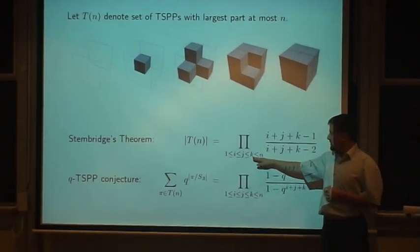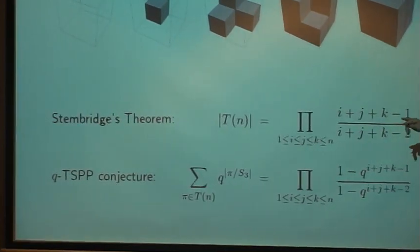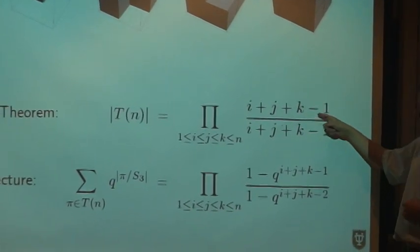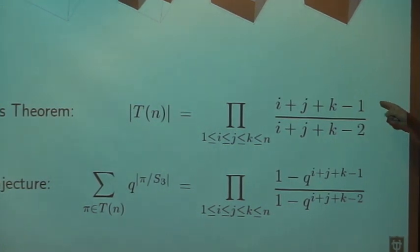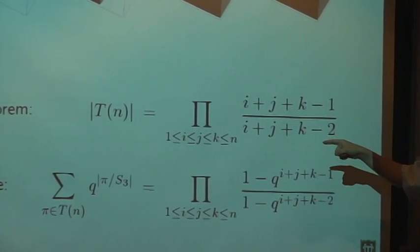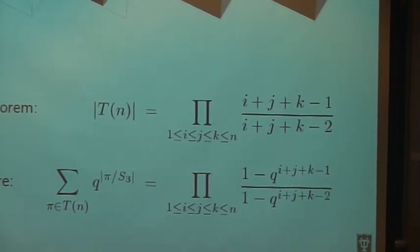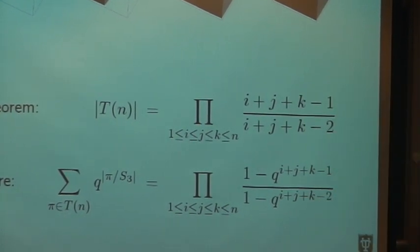We have ijk - we can put 1,1,1, we can 1,1,2, 1,2,2, 2,2,2, and then we get here 2 over 1 times 3 over 2 times 4 over 3 times 5 over 4. So everything cancels away except the 5, and we get that there are 5 totally symmetric plane partitions which fit into a cube of length 2.